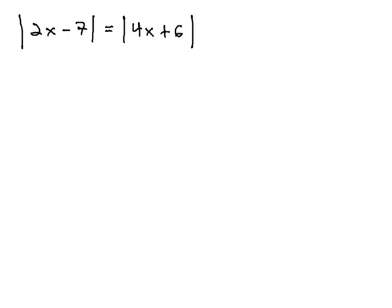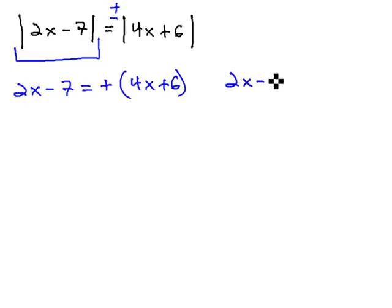We will do the exact same thing here, saying that we've got this first absolute value, the 2x minus 7, is equal to this other stuff. We will consider both the positive and negative results. We will say 2x minus 7 could be equal to a positive 4x plus 6, or we'll set up a second equation: 2x minus 7 could equal a negative 4x plus 6.